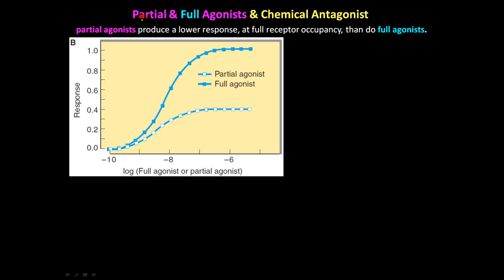Next we move to partial and full agonists and chemical antagonists. Partial agonists is what we've talked about previously, but here's another example. A partial agonist only produces a partial effect. The response is not 100%, it's anywhere from 0.0001 to 0.9999. It doesn't produce the full effect. The full agonist produces the full effect and can reach the max response. Very simple concept.